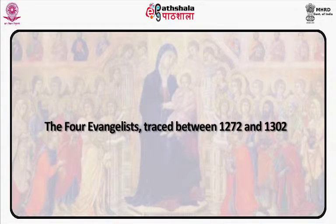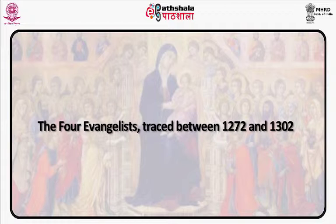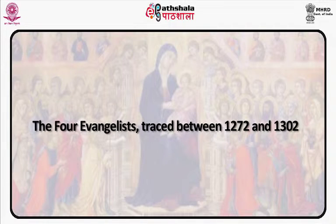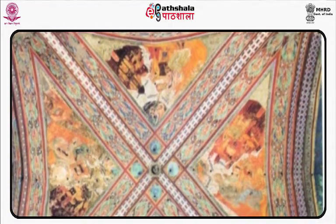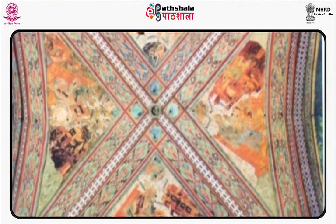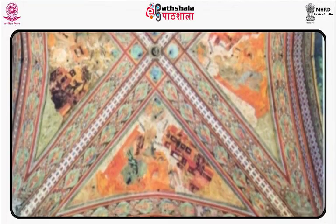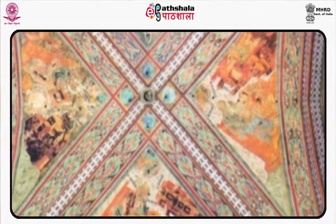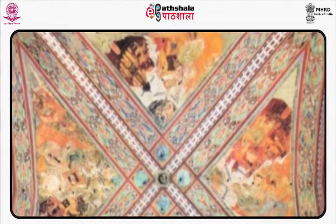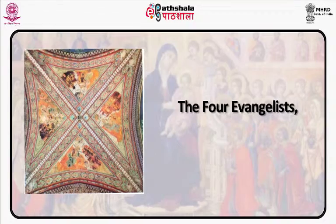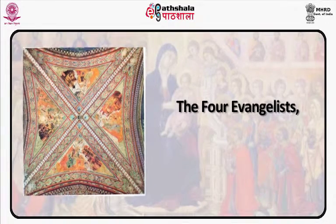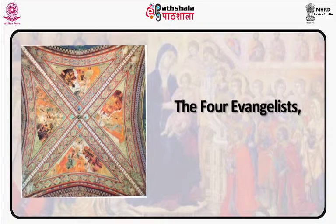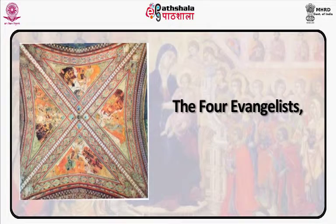Cimabue seems to have been among the first to return to a close observation of nature. Let us look at Picture 4, the Four Evangelists, painted between 1272 and 1302 — the Four Evangelists in the vault of the crossing of the upper church of Assisi, which is culturally conceived, but its solidity and bulk are heightened by a crystalline city view that accompanies each of the figures. The view of Rome that accompanies St. Mark, for example, is not only one of the earliest recognizable views of the city, but is also one of the first in which the buildings seem solid and separated from one another by a clearly defined space.